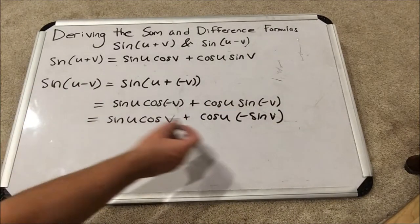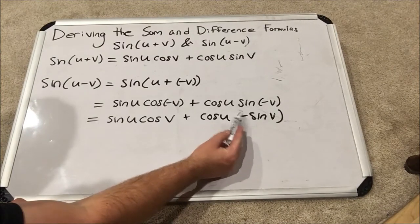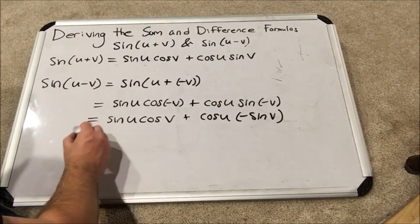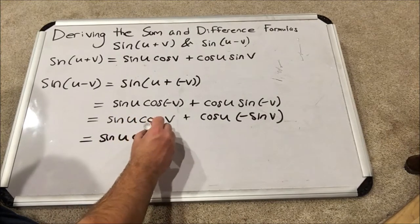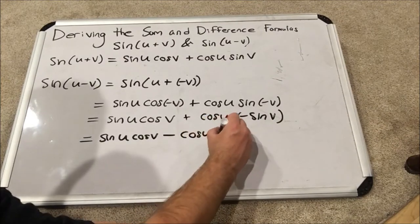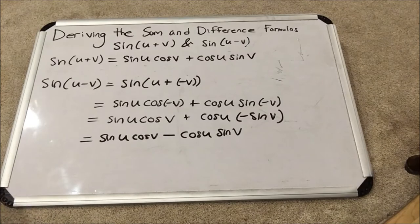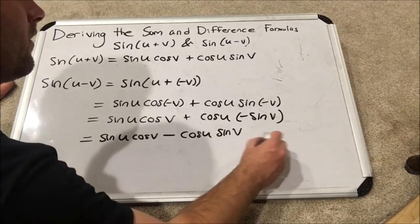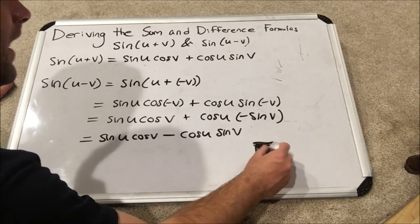Now there's a nicer way to write this so that we don't get confused that this is multiplication. We just bring the minus out in front. So, now we have sine U cosine V minus cosine U sine V. And we have finished. We have proved both formulas for the sum and difference of sine of two angles.